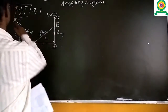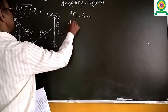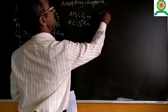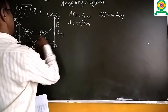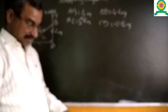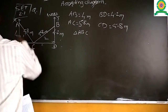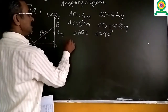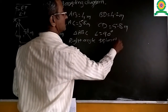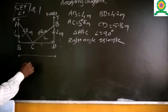We now write the given lengths. Length of AB is equal to 4m. Length of AC is equal to 5.8m. Length of BD is 4.2m. Length of CD is equal to 5.8m. We want to find out the distance between the two walls — that is, distance BD.